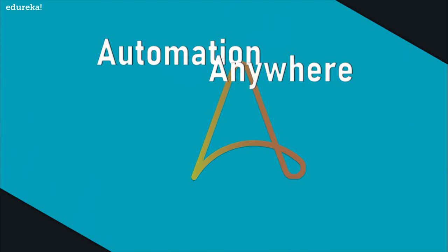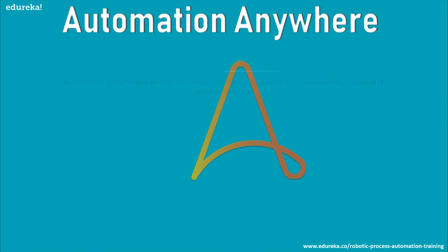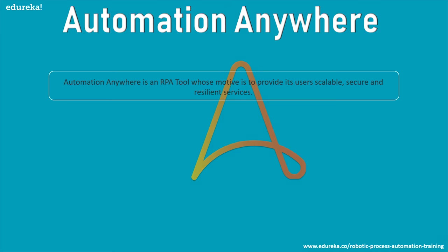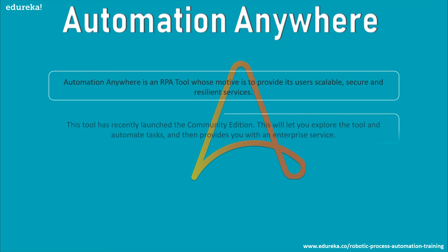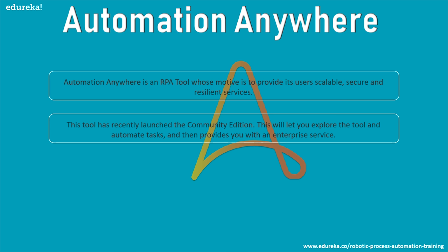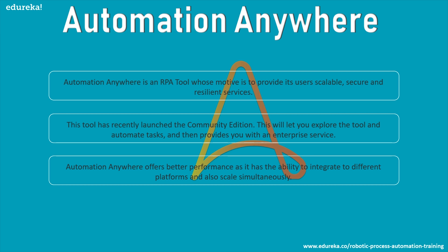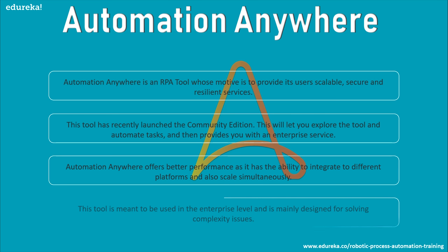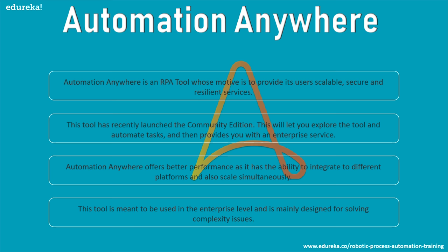Automation Anywhere is an RPA tool whose motive is to provide scalable, secure, and resilient services. It has recently launched a community edition, which lets you explore the tool and automate tasks, and then provides enterprise service. Automation Anywhere offers better performance as it can integrate with different platforms and scale simultaneously.